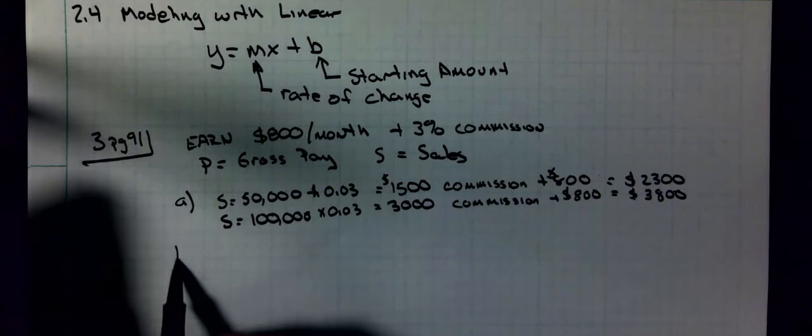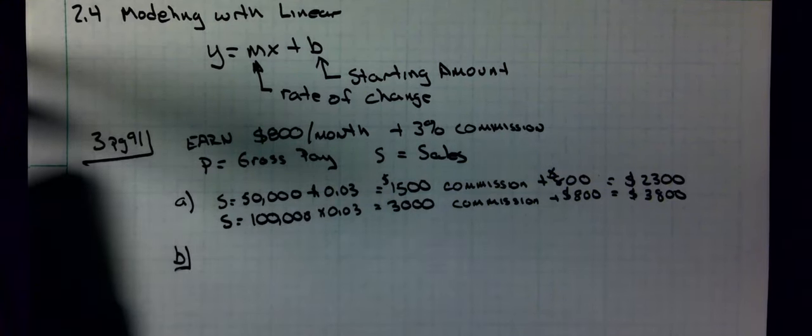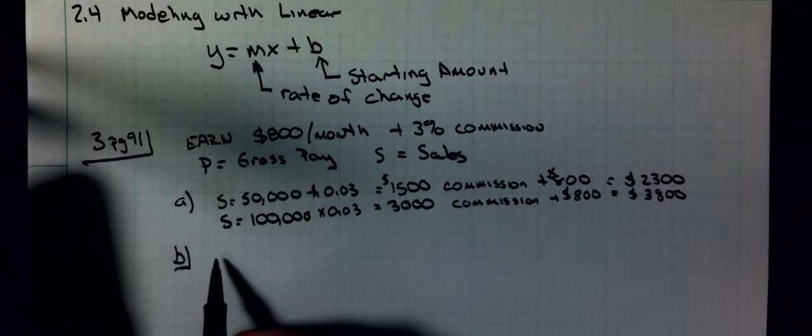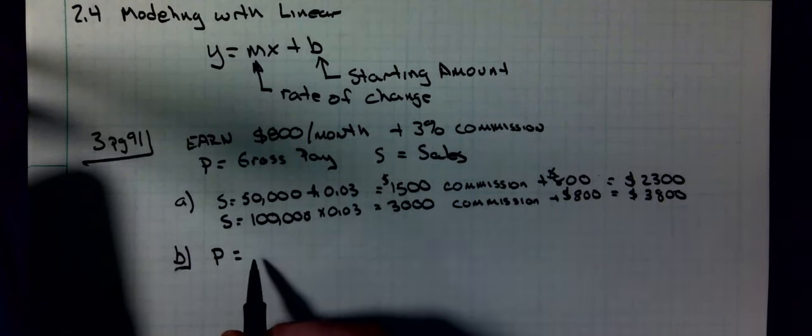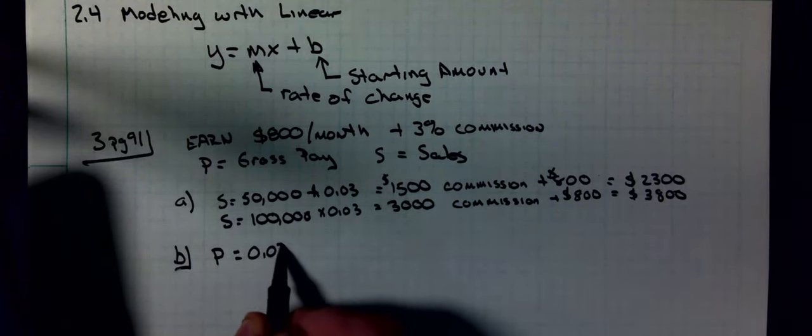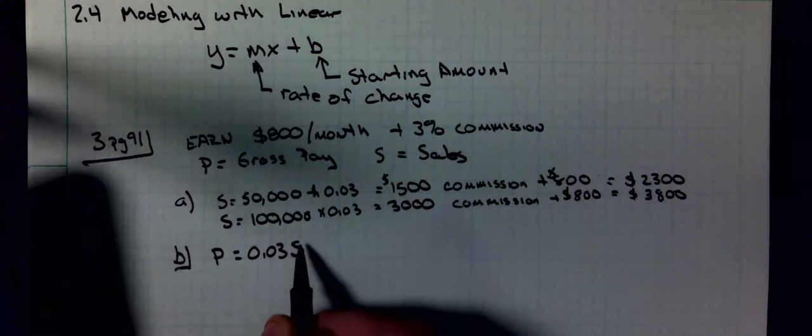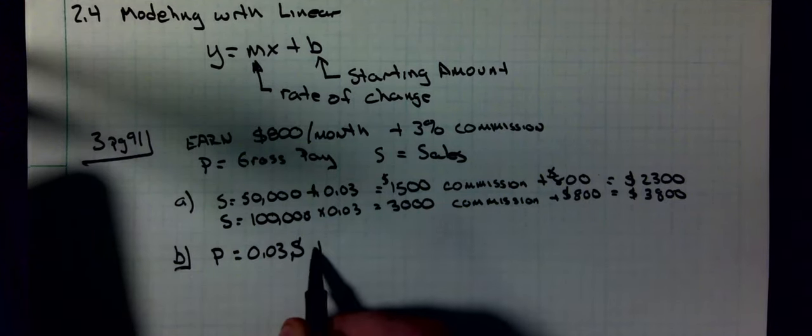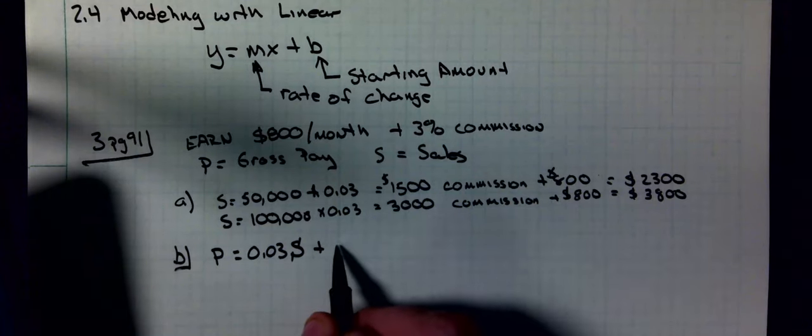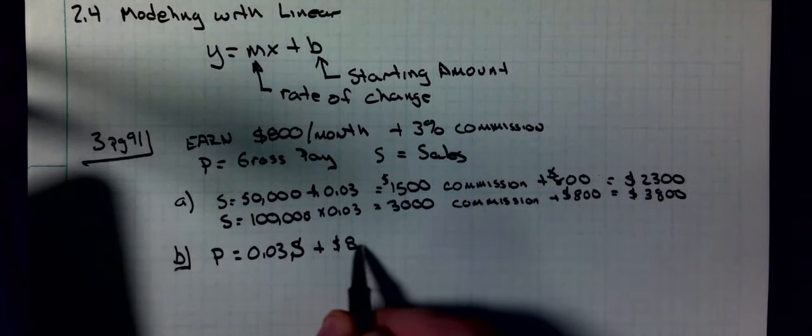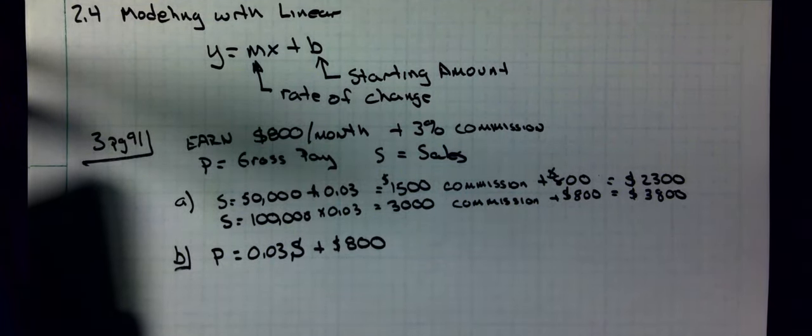That's how I would expect a late elementary school or middle school student to come up with the answers. Part b they say hey, give me the equation. Gross pay: my gross pay is 0.03 times my sales plus $800 per month. That would be the answer to part b.